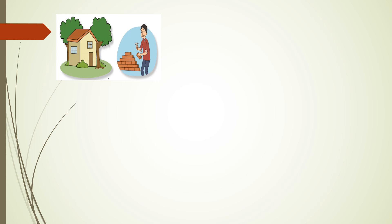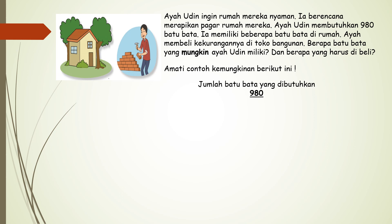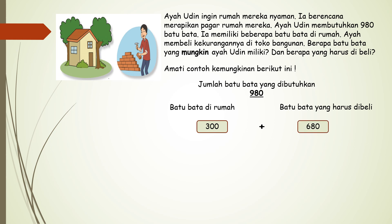Anak-anak, selanjutnya kita beralih pada masalah Ayah Udin. Ayah Udin ingin rumah mereka nyaman. Ia berencana merapikan pagar rumah mereka. Ayah Udin membutuhkan 980 batu bata. Ia memiliki beberapa batu bata di rumah dan membeli kekurangannya di toko bangunan. Amati contoh kemungkinan berikut ini. Jika batu bata yang di rumah ada 300, maka batu bata yang harus dibeli adalah 680, karena 300 ditambah 680 sama dengan 980.